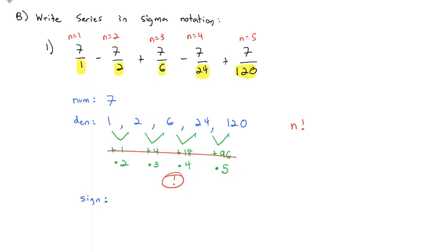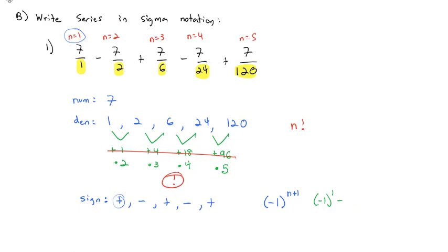The other thing to watch for is the signs. Notice they go positive, negative, positive, negative, positive — alternating signs. When we have alternating signs, we can use negative 1 raised to some exponent. Sometimes the exponent is n, sometimes it's n minus 1. Since the first term where n equals 1 is positive, and negative 1 to the first power is negative, we'll use n plus 1 as the exponent. By making it n plus 1, on the first term 1 plus 1 is 2, and negative 1 squared is positive 1, giving us the positive sign we need.